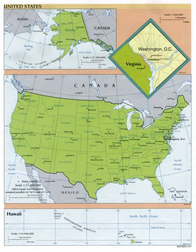In Virginia, cities are completely independent from the county in which they would otherwise be a part. In some states, particularly in New England, towns form the primary unit of local government below the state level, in some cases eliminating the need for county government entirely.